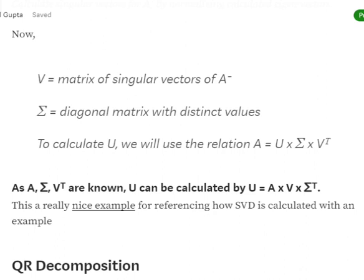For calculating U, the third remaining matrix, we use the equation A equals U cross Sigma cross V-transpose. Since we know A, Sigma, and V-transpose, we can solve for U: U equals A cross V cross Sigma-transpose. Placing all these values together, we obtain U as well. This is how SVD decomposition works — using singular values to construct the three decomposed matrices.